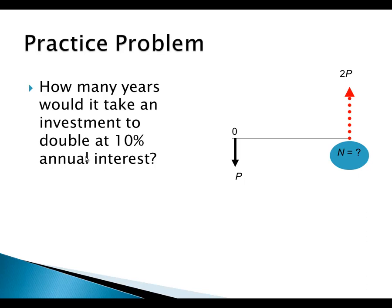Now let's practice: how many years would it take an investment to double at a 10% annual rate? So far we've calculated the future value, the interest rate, and the present value — we can also calculate the number of periods. This demonstrates how we can utilize the same formula to find different variables.